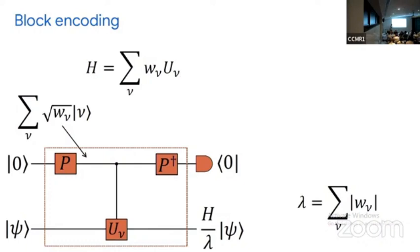The divide by lambda accounts for the fact that this projection onto zero isn't deterministic. In the actual simulation we're not literally doing that projection — it's an abstraction to understand a further procedure for constructing a quantum walk used for time evolution. The key thing is this block encoding of the unitary.